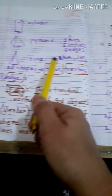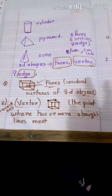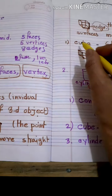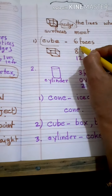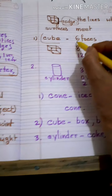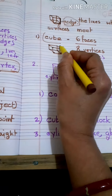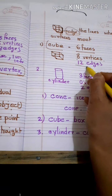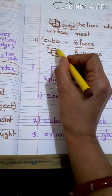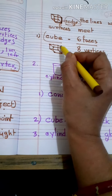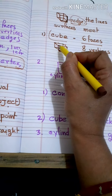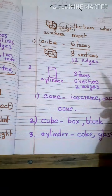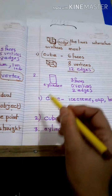So, faces, vertices, and edge — there are three key properties in 3D shapes. Now, cube: how many faces are there? Six faces. How many points are there? Eight vertices. How many edges are there? Let me count: 1, 2, 3, 4, 5, 6, 7, 8, 9, 10, 11, 12 — twelve edges.